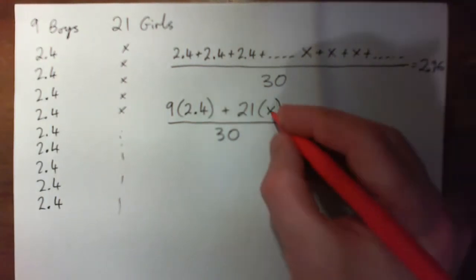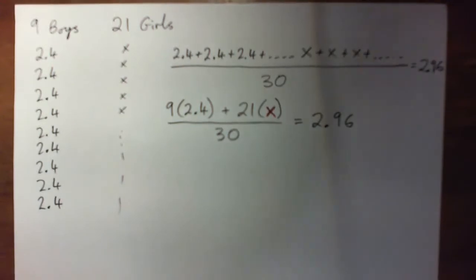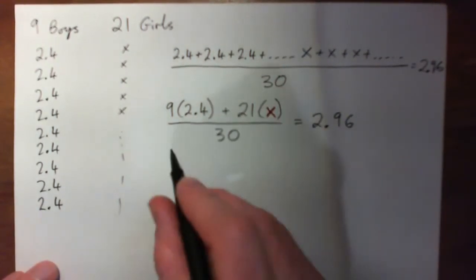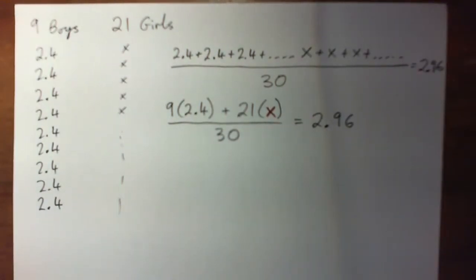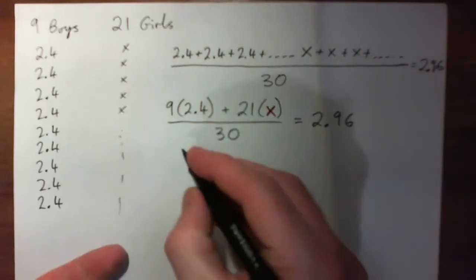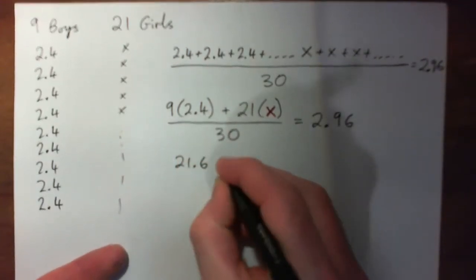And now we can solve that equation to find X. So go ahead and press pause on the video, find X, and then play the video and see if you got the right answer. I hope you've tried it yourself, I'm gonna do it now. So 9 times 2.4, should probably get a calculator so I don't make a mistake, but I think that's 21.6.